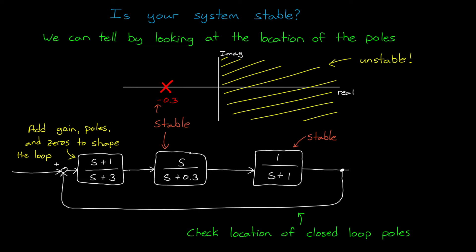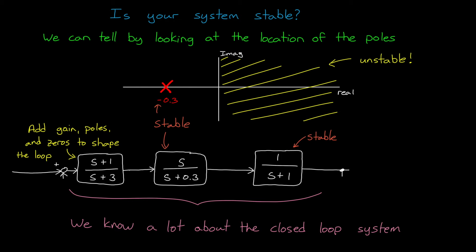And something that I find really amazing is that we don't even need to find the closed-loop transfer function to determine closed-loop stability. We actually know a lot about the closed-loop system just by looking at the poles and zeros of the open-loop transfer function. This means we can design a closed-loop controller simply by shaping the s-domain characteristics of the open-loop system.